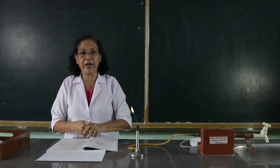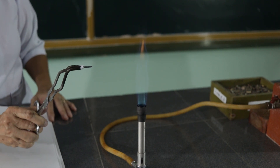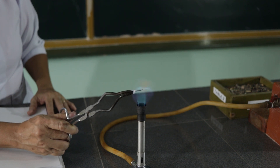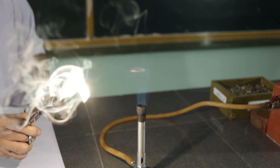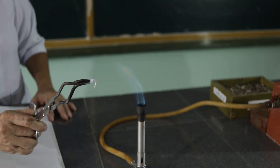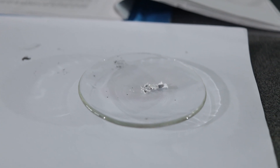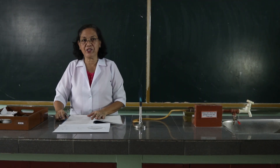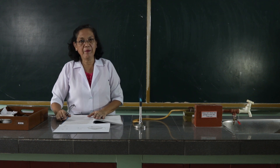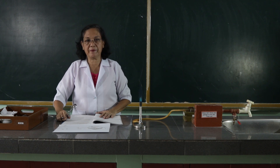The next procedure is, we are going to ignite the magnesium ribbon into this non-luminous flame. Let us ignite this magnesium ribbon into the non-luminous flame and observe. What have you observed? Look at the color of the ash after burning the magnesium ribbon. You are asked to write the chemical equation representing the reaction. Because this is magnesium being burned, the chemical reaction is magnesium plus oxygen equals magnesium oxide.